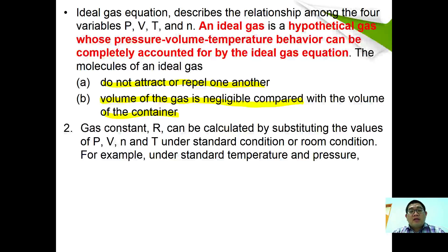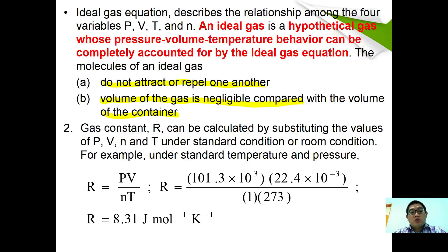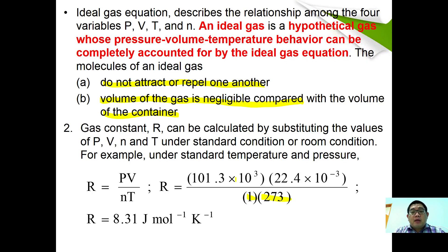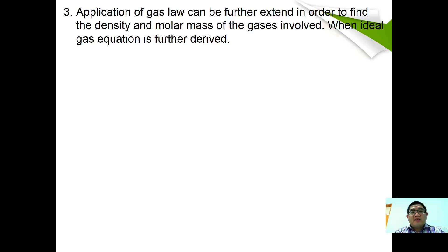The gas constant R can be calculated by substituting values of P, V, n, and T under standard conditions. For example, at STP: R = PV/nT = (101.3 × 10³ Pa × 22.4 × 10⁻³ m³/mol) / (1 mol × 273 K), which gives R = 8.31 J mol⁻¹ K⁻¹. The ideal gas equation can also be extended to find the density and molar mass of gases, giving a rearranged equation where M = DRT/P.